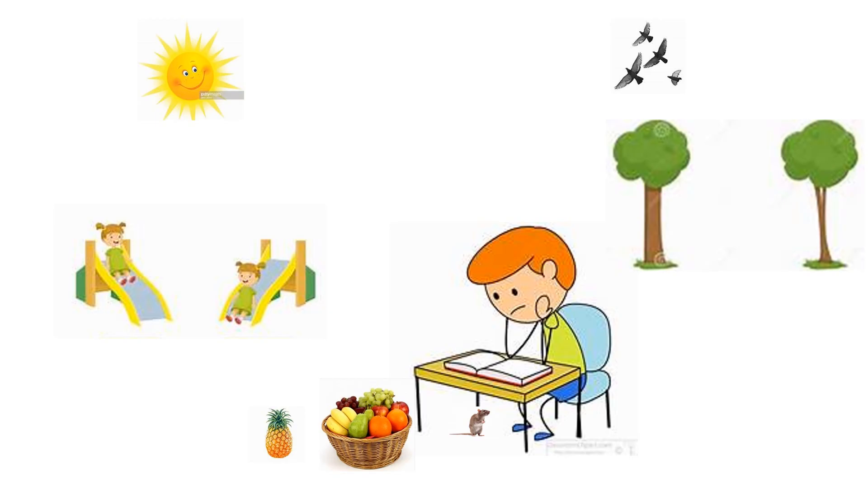Dear children, here is a picture. Are you able to see the picture? Yes. Can you tell me what all things you are able to see one by one? You can see the sun, birds, trees, girls, very good, a boy, fruits, fruit basket. Can you spot a rat anywhere in the picture? Excellent.